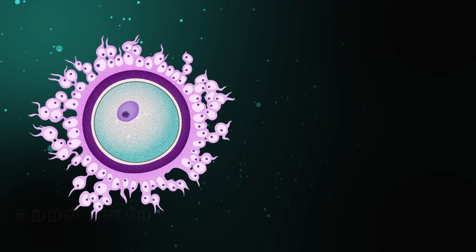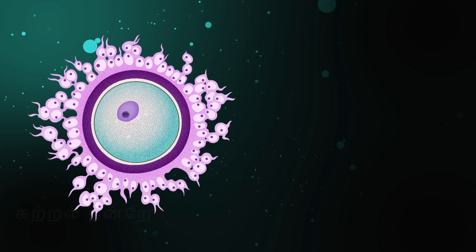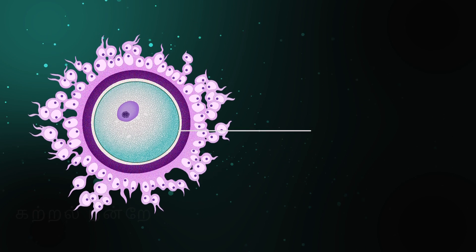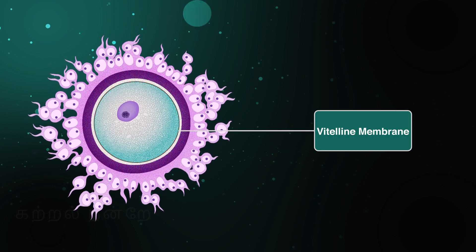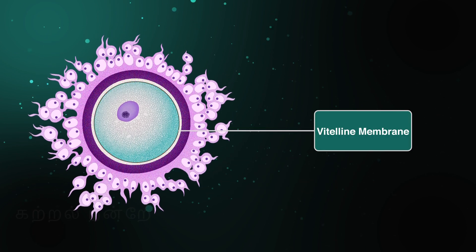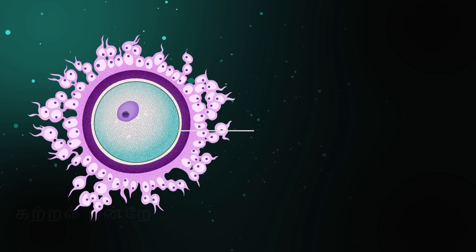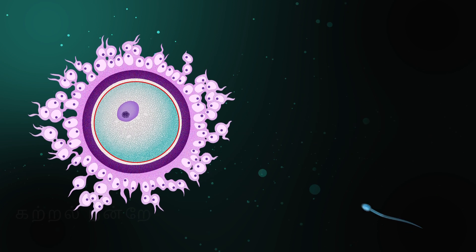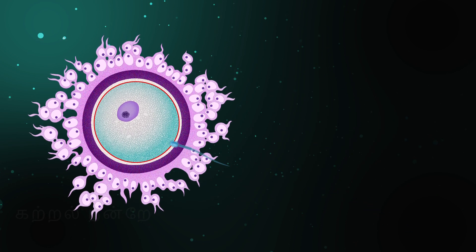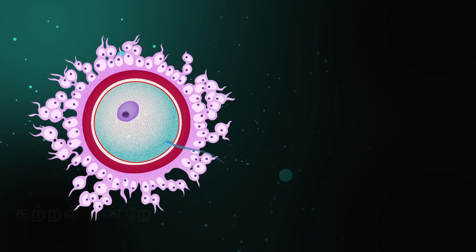The thin cell membrane surrounding the ooplasm is called the vitelline membrane. Key events of fertilization begin only after a sperm cell penetrates this membrane.